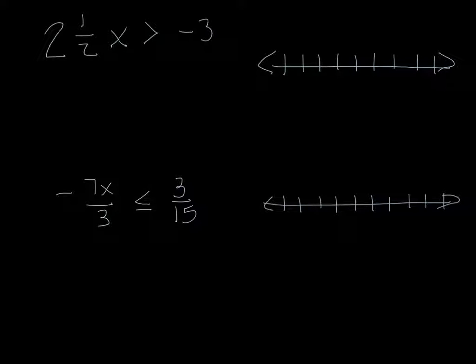So I'm going to try this one here. What we've got here is a mixed number times the variable. So to solve this one, I do have to divide by that mixed number. Now to divide, the first thing I would do is rewrite this as an improper fraction. To do that I would multiply by the bottom, add the top, so this becomes five halves x is greater than negative three.